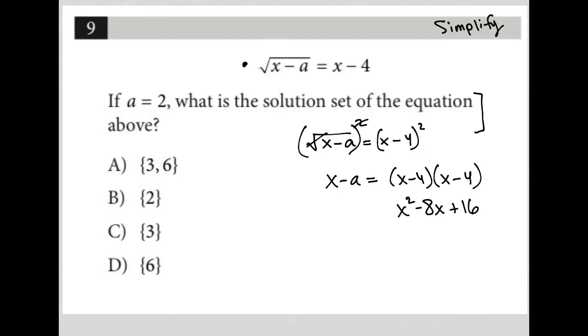The question tells me that a is equal to two. I should have thought of that earlier, but I can just throw it in right now. Since a is two, this is going to say x minus two is equal to x squared minus 8x plus 16.